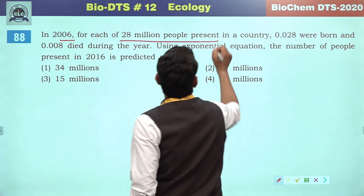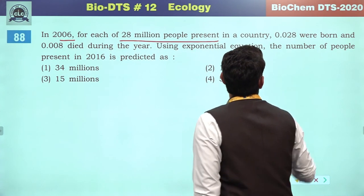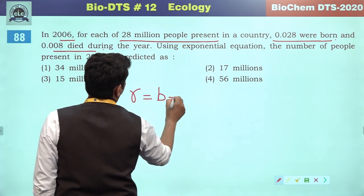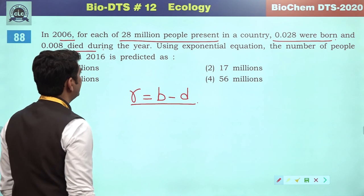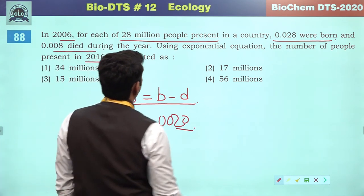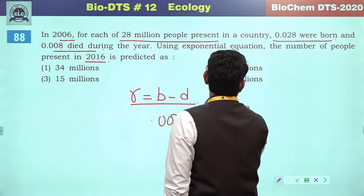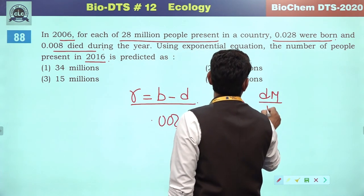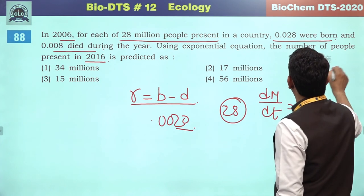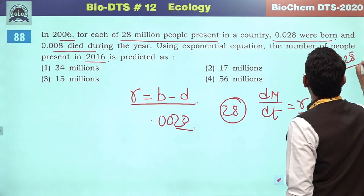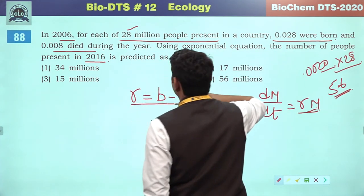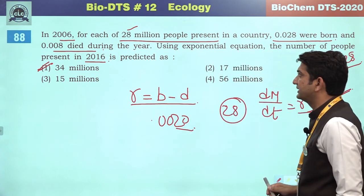In 2006, for each 28 million people present in a country, 0.0208 were born and 0.0208 died. Here r = b − d. With the average base of 28 million and the increase calculated, it will be approximately 34 million. So the fourth will be the correct answer.